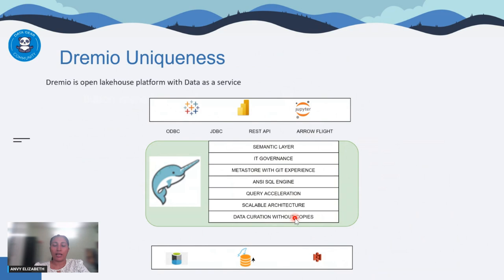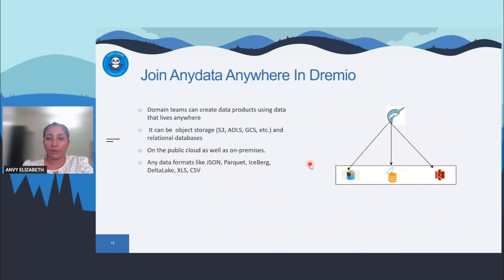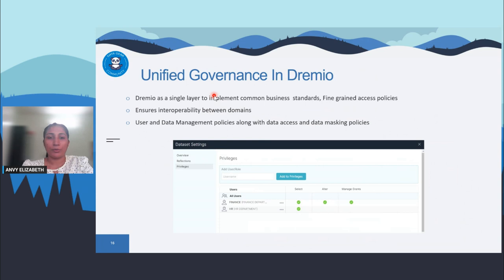Dremio is a very good open data lakehouse platform that provides data as a service. Domain teams can create data products using data that lives anywhere — Dremio lets you query and join data from any location, whether it's a legacy system, S3, or Azure Data Lake Storage (ADLS), whether in the cloud or on-premise, and in any format — JSON, Parquet, Iceberg — all are supported. That is one of the key advantages that makes Dremio well-suited for implementing data mesh.